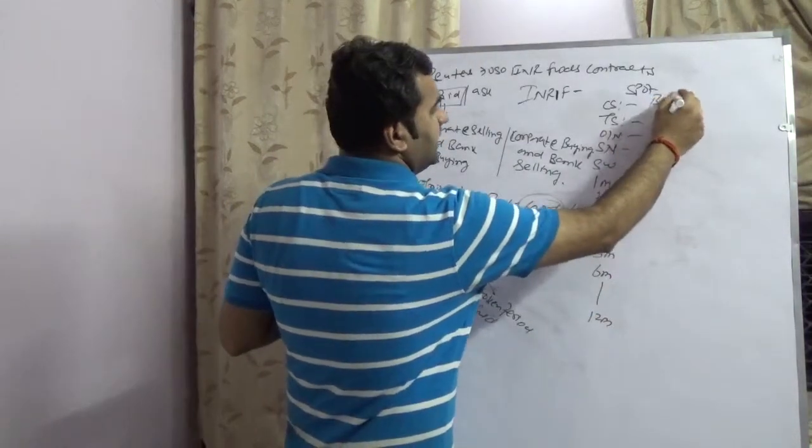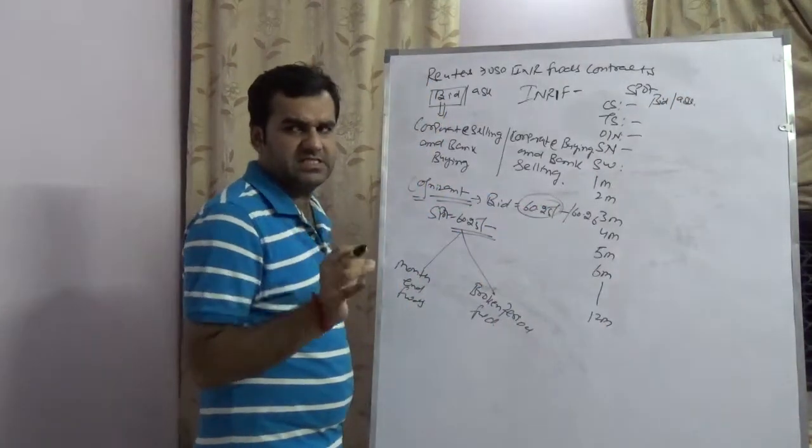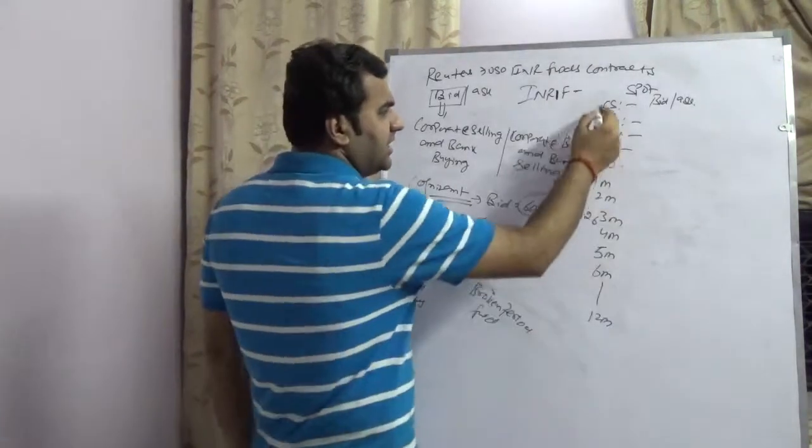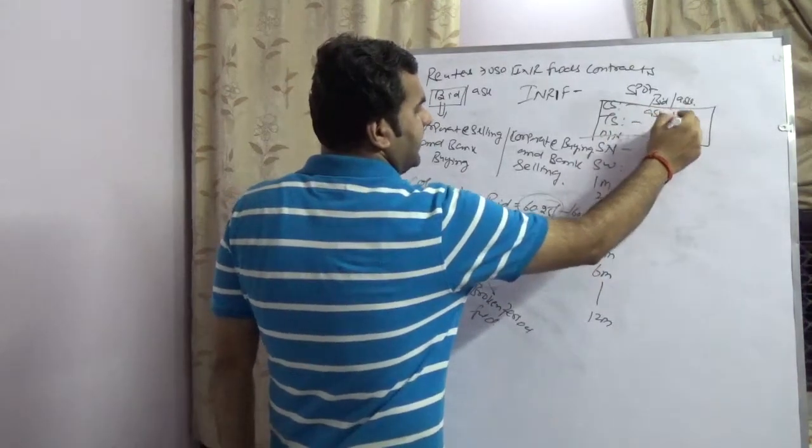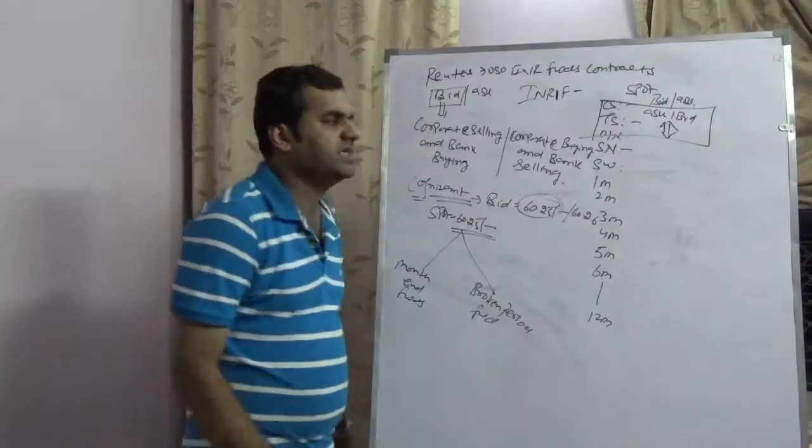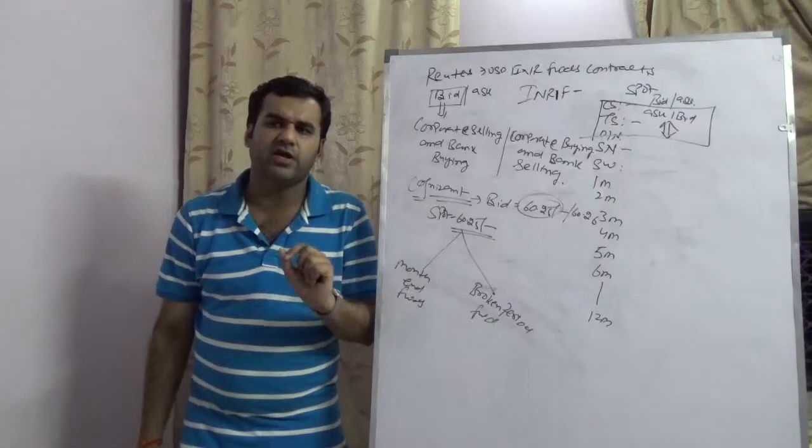And this is going to be the bid, this is going to be the ask. The only thing that would be variable in this, that would remain little bit off from fundamentals is that cash spot, tom and overnight are conventionally quoted like that. It is ask and bid. So only these three rates would be quoted like that, which is ask and bid. So first you have importer, then you would have exporter.